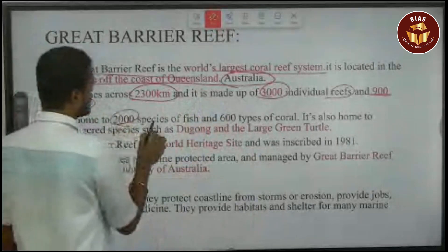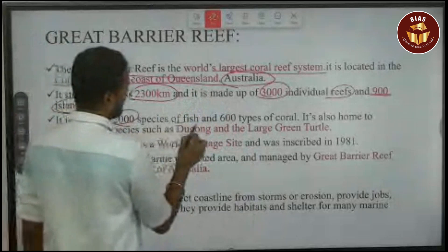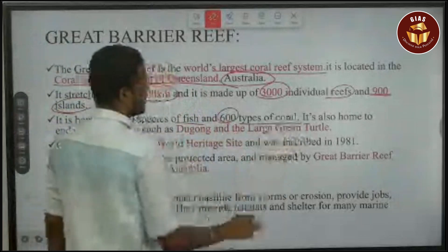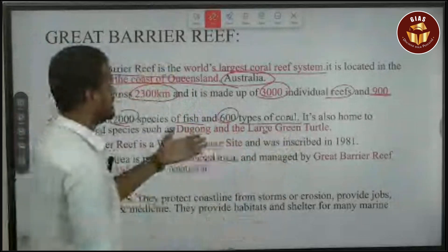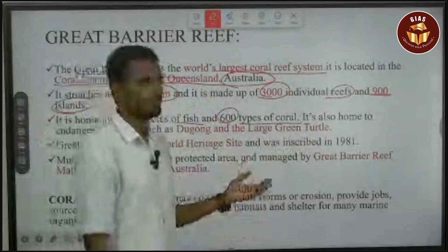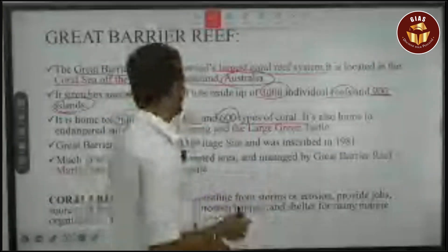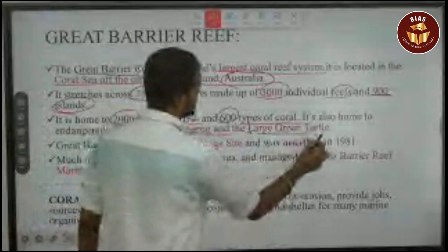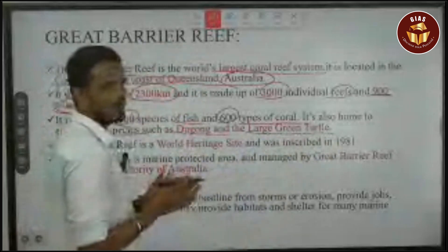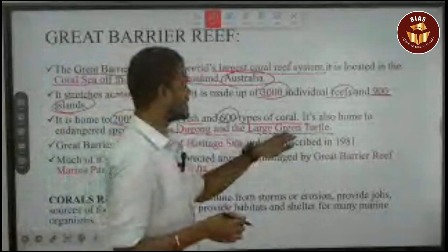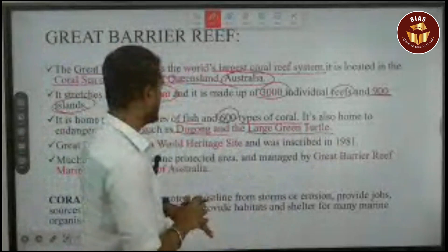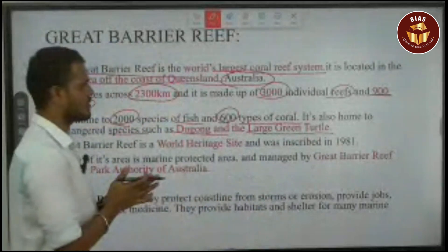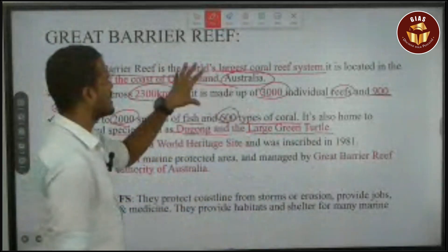It is home to 2,000 species of fish and types of coral. It is also home to species such as dugong and the large green turtle, which is a marine mammal. It is also home to endangered species.